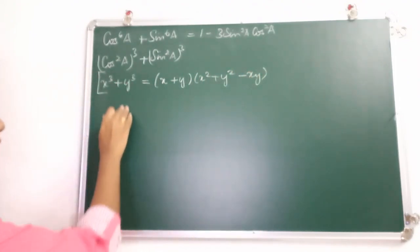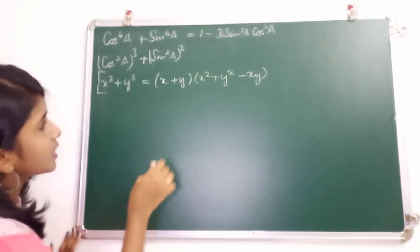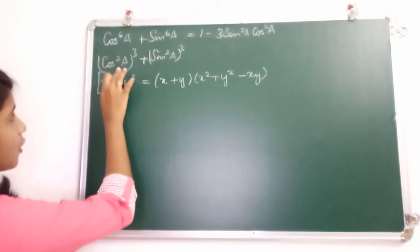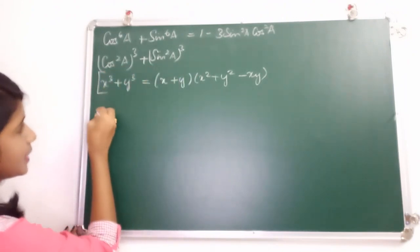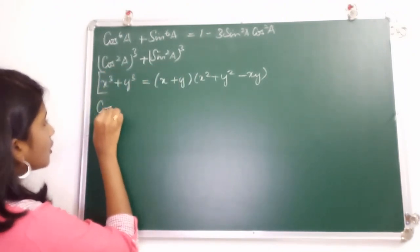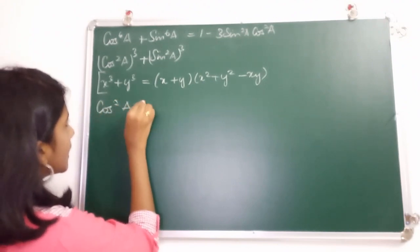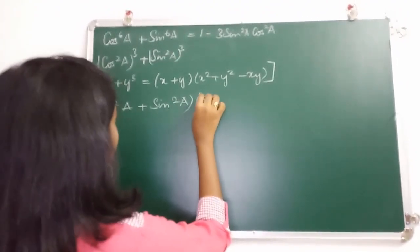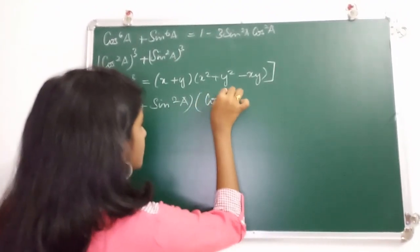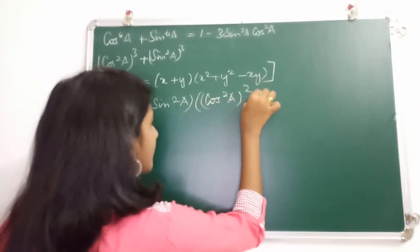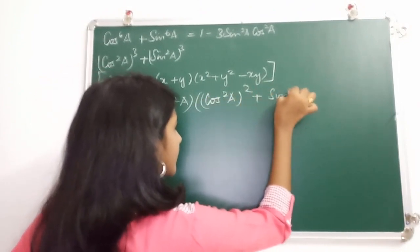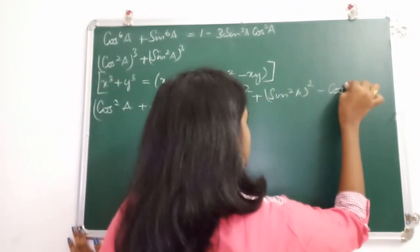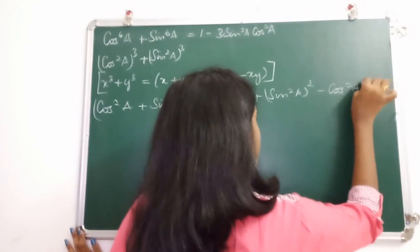Taking x as cos²A and y as sin²A, we expand to get (cos²A + sin²A) into (cos⁴A + sin⁴A minus cos²A sin²A). Since cos²A + sin²A equals 1, we have 1 into (cos⁴A + sin⁴A minus cos²A sin²A).